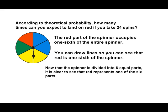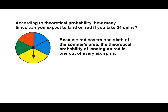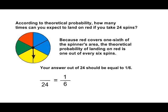The theoretical probability of landing on a red section is one out of every six spins. So out of 24 total spins, the number of times we can expect to land on red should be equivalent to the fraction of one-sixth.